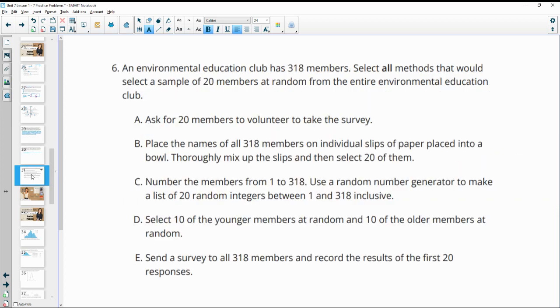Number six. An environmental education club has 318 members. Select all methods that would select a sample of 20 members at random from the entire environmental education club. So ask 20 members to volunteer. Volunteering is not random. Place the names of the 318 members on individual slips of paper in a bowl. Thoroughly mix it up and then select 20 of them. That is random.